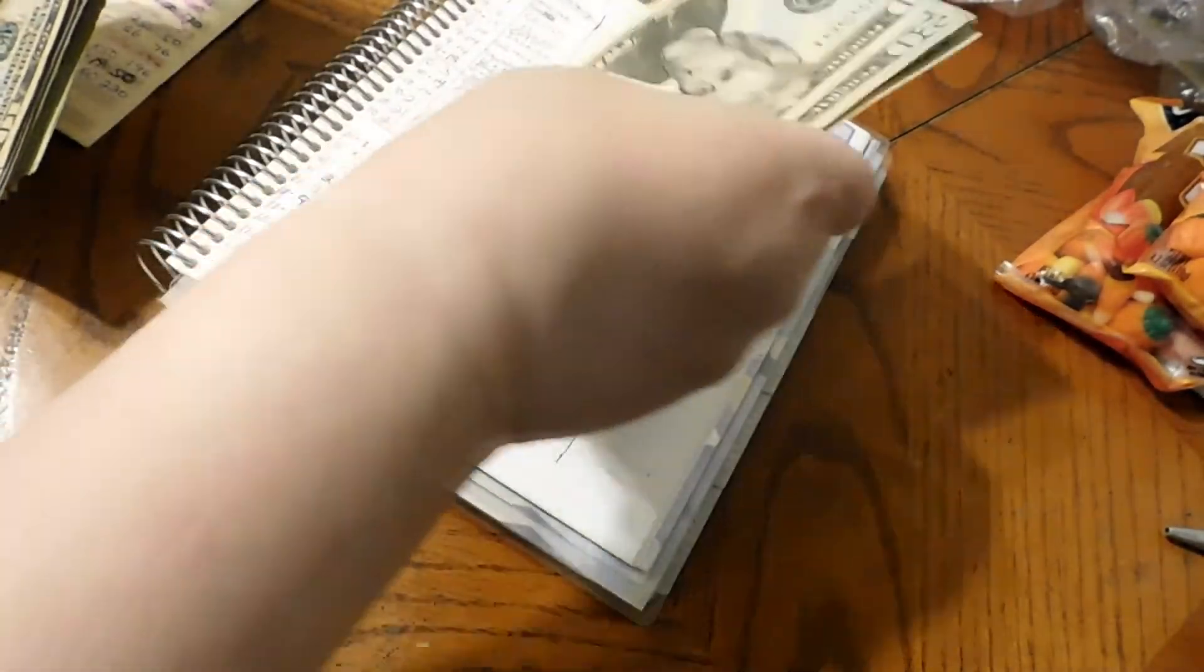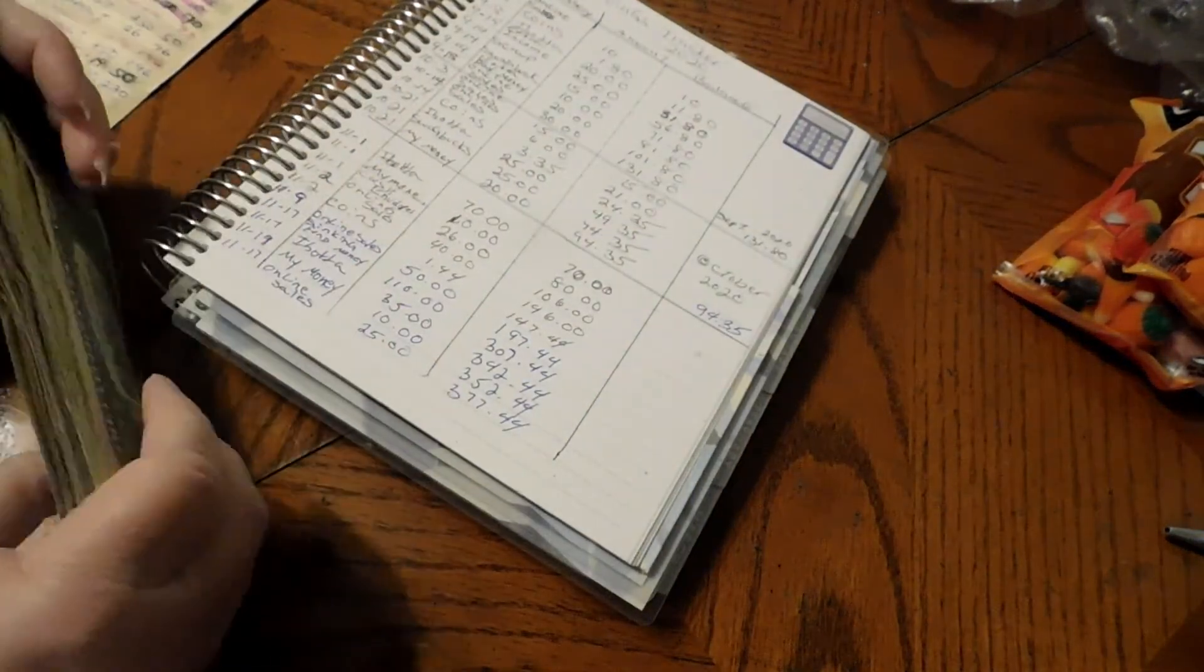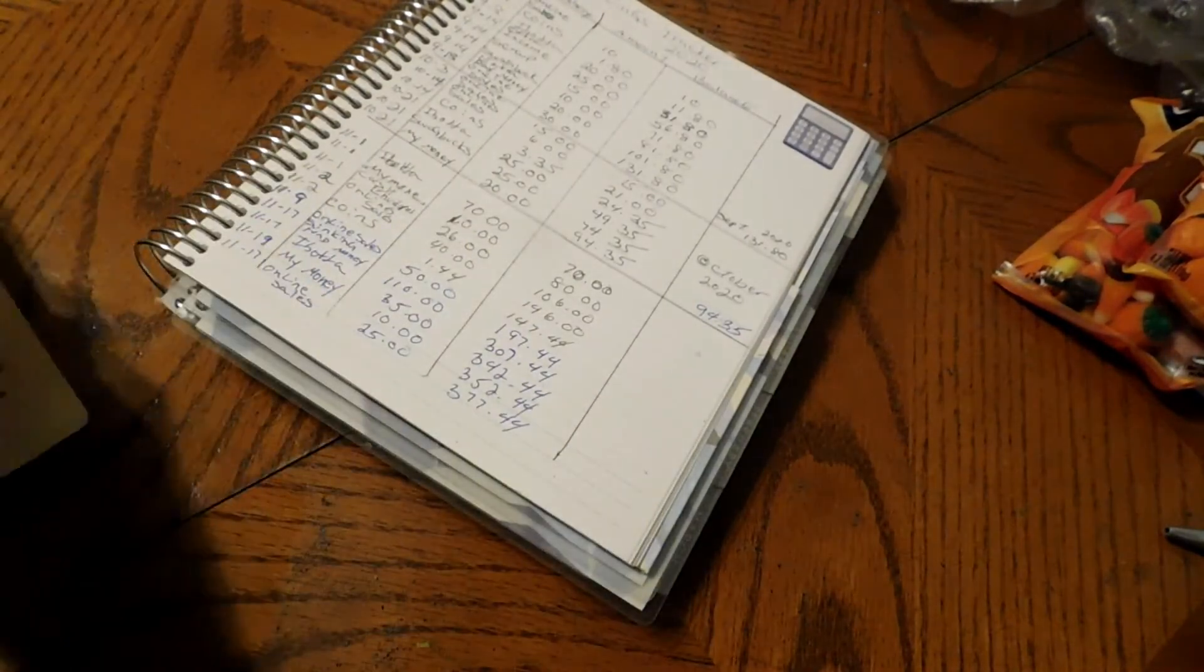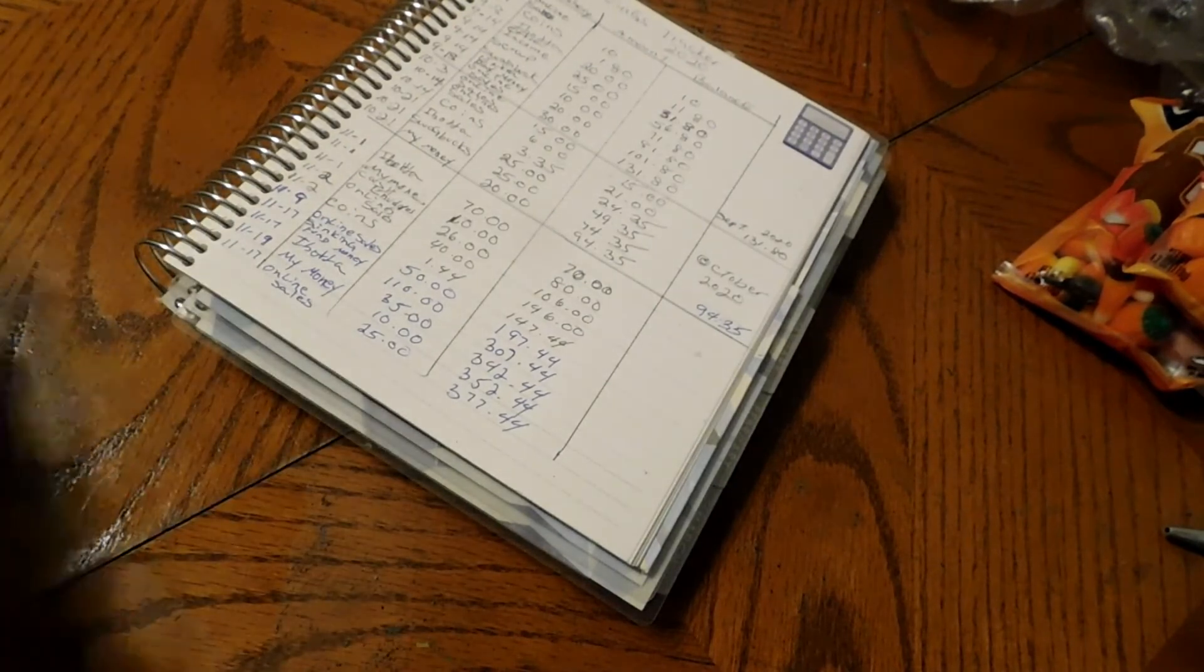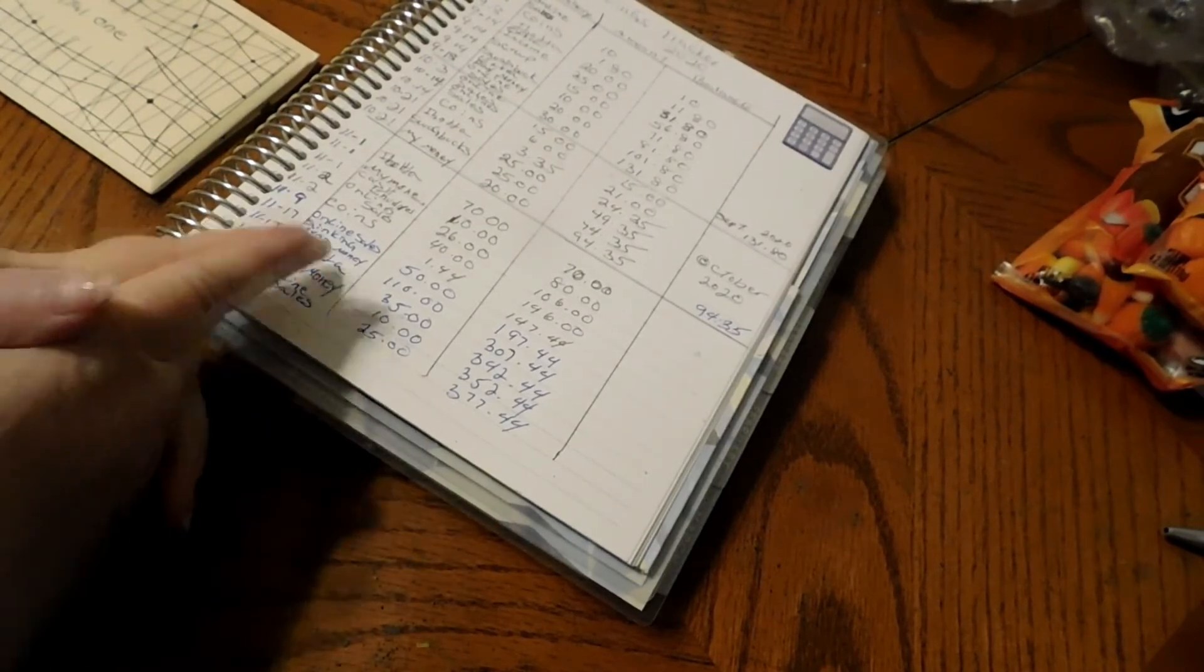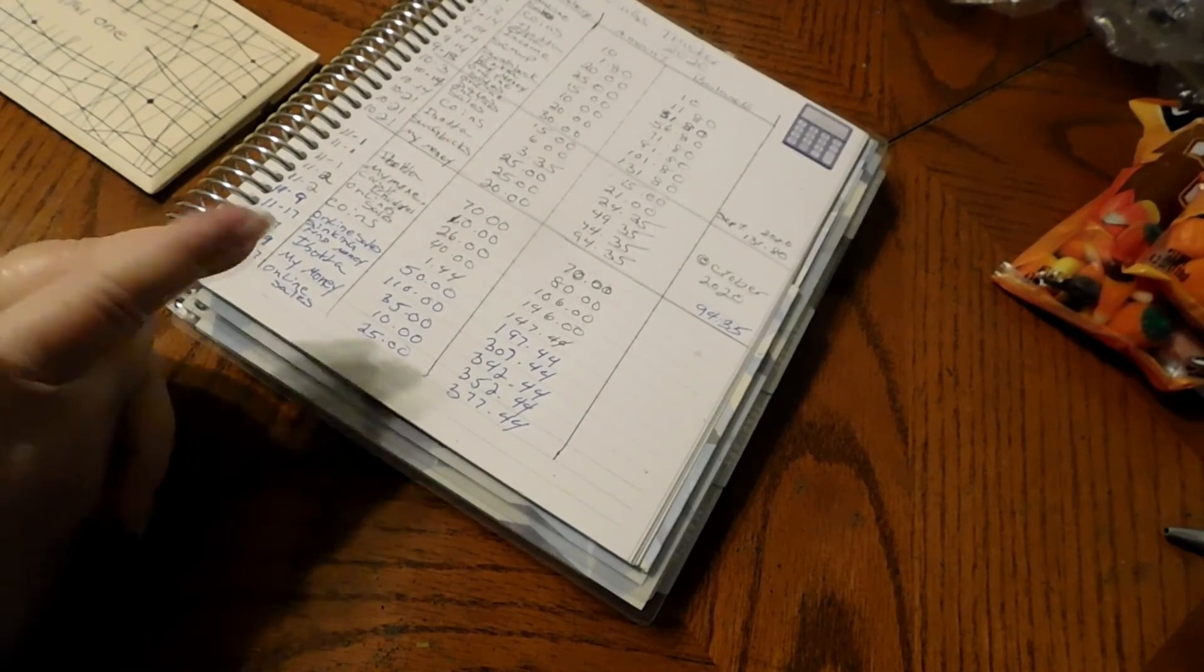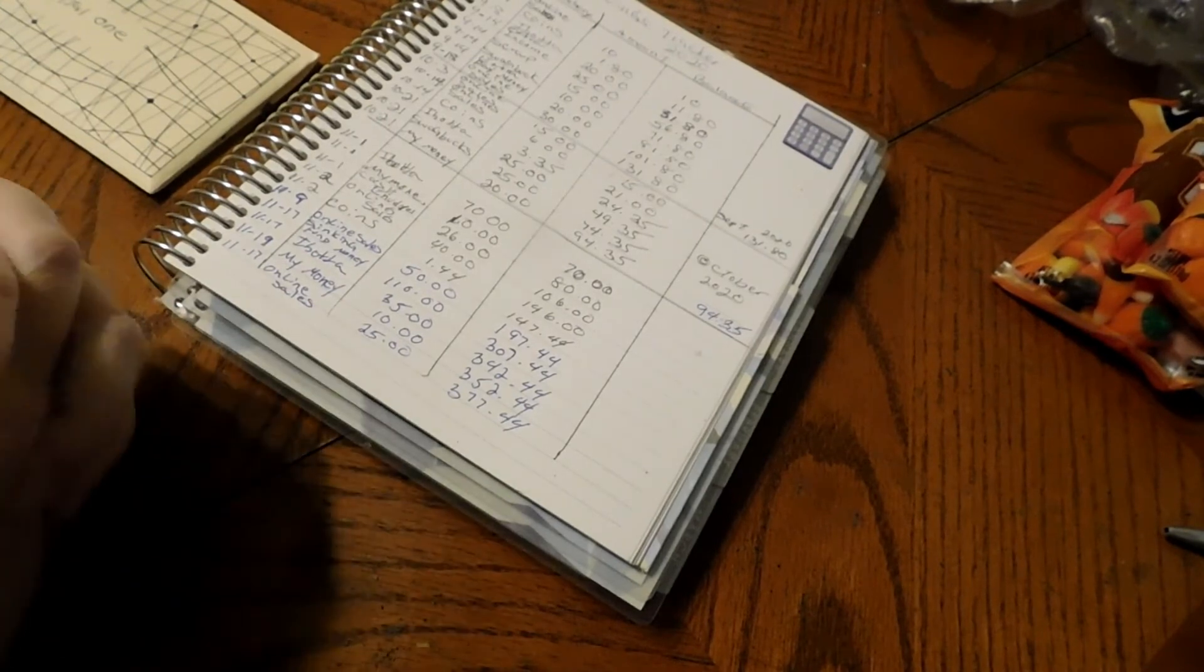When I get the statement in for Capital One, $230 plus the payment that we have for Capital One will go to them to make a payment. But we're doing pretty good. $377.44 we've made so far, and this is just the middle of November.